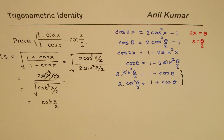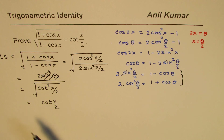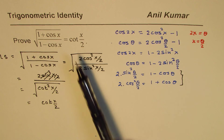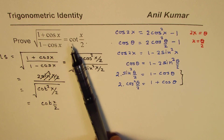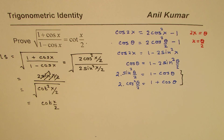So that is the proof. We always take the positive value in this particular case, so we get cot(x/2). That's the proof for this identity: the square root of (1 + cos x) / (1 - cos x) equals cot(x/2).